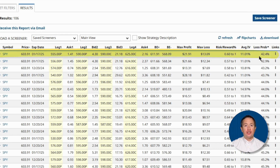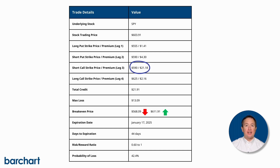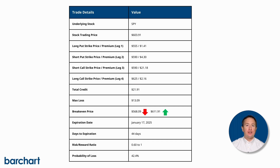According to the trade, you can create a short iron butterfly spread on the SPY, with the ETF currently trading at $603.91. You buy one $555 strike put, paying $1.41 per share. Then you sell the $590 strike put, collecting a premium of $4.30 per share. Then you sell the $590 strike call, collecting a premium of $21.18 per share. Finally, buy the $625 strike call, paying $2.16 per share. This results in a total net credit of $21.91 per share, or $2,191 total per contract.